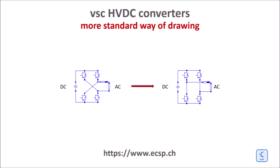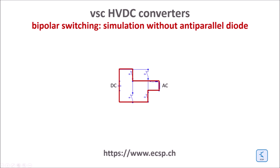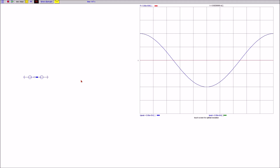From now on I will use the standard representation of converter legs. In the case of the bipolar switching arrangement, the IGBTs are switched pairwise synchronously so that the AC side output oscillates between positive and negative polarity of the DC source, as dictated by the controller output signal. If there is no time lag between the switching instances of the two legs, the anti-parallel diode can be removed without getting overvoltage.